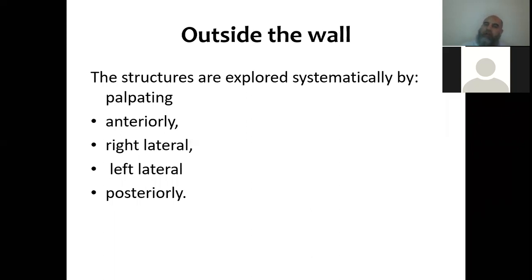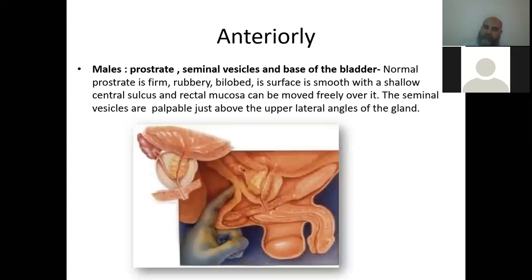For structures outside the wall, you need to know the pelvic anatomy — what lies anterior, posterior, right lateral, and left lateral to the rectum. Anteriorly in a male there is the prostate; in a female there is the cervix and uterus. This knowledge is essential to correctly identify what you are palpating through the rectal wall.